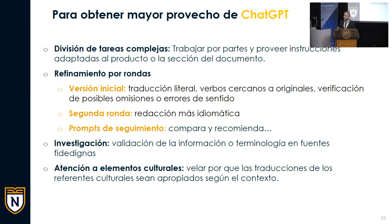Refinamiento por ronda: la traducción que produce inicialmente la aplicación va a tender a ser bastante literal y con verbos cercanos a los originales. Ahí nos corresponde a nosotros verificar si hay omisiones de contenido o errores de sentido. Ya en una segunda ronda podemos someter el mismo texto a redacción y pedirle a ChatGPT que haga una redacción más idiomática. Cuando decimos más idiomática, debemos darle información más particular y puntual: en el campo tal, para un curso tal. Refinar ese prompt nos arroja otros resultados que tenemos como elementos de evaluación para tomar nuestras decisiones. También son útiles los prompts de seguimiento tipo 'compara y recomienda.'